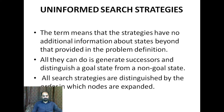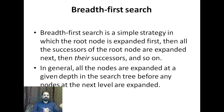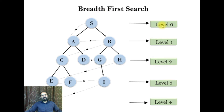The first uninformed search strategy is breadth-first search. It is a simple strategy in which the root node is expanded first, then all the successors of the root node are expanded next. After the root node expands, the next layer of successors will expand, and then the layer after that.